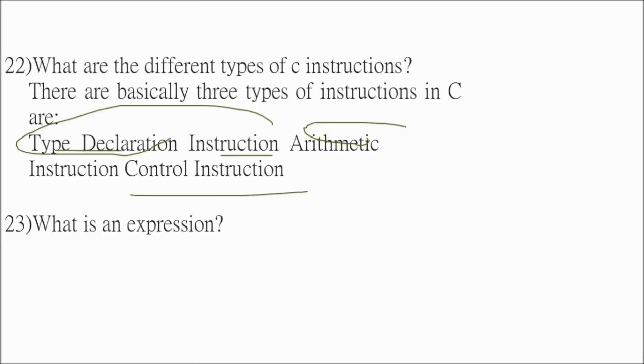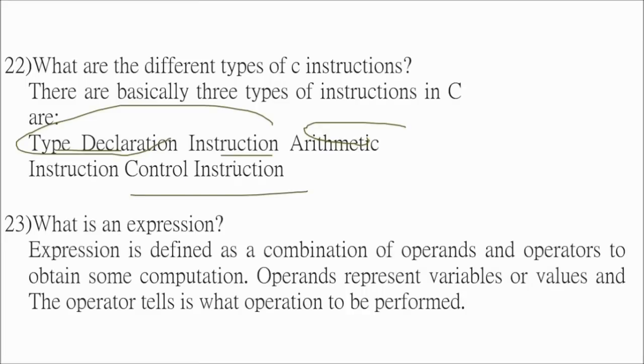What is an expression? Expression is defined as a combination of operands and operators to obtain some computation. So operands represents variables or values and the operator tells what the operation will be performed.